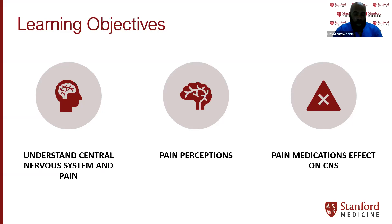Our objectives for today: first, understand what the central nervous system is and what it does to pain. Another objective is pain perception — how your understanding or how you feel affects your pain; it's more about the mind-body connection. And finally, we'll look at pain medications we commonly take, where they fall in the central nervous system, and what they affect, so when you take them you can picture where those medications are working. After that, we'll review the summary.